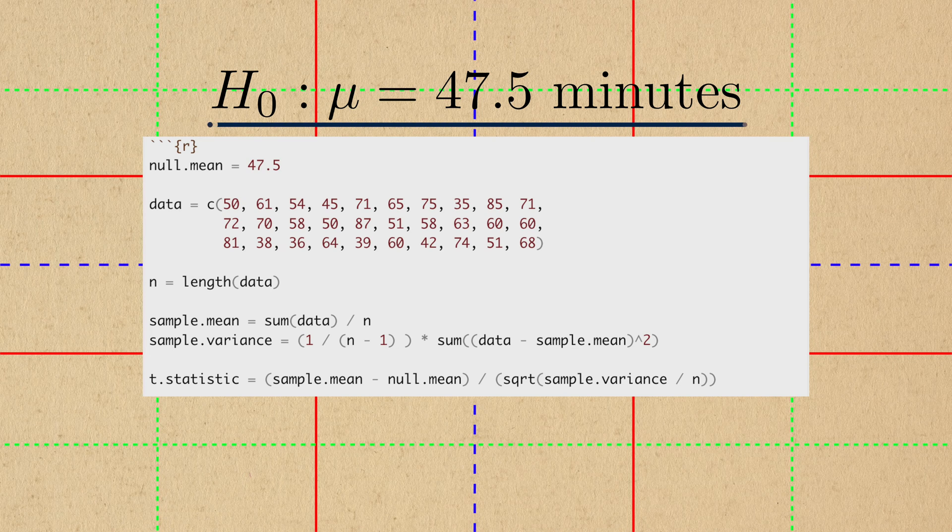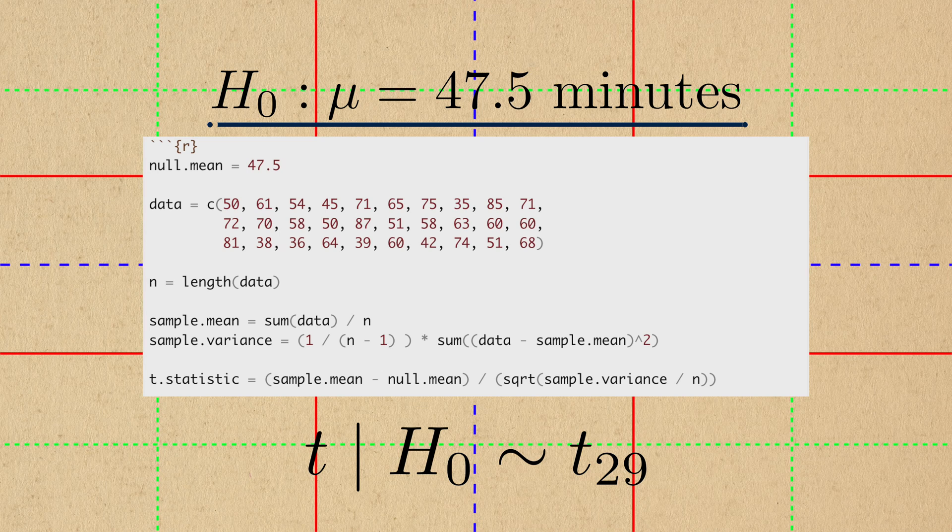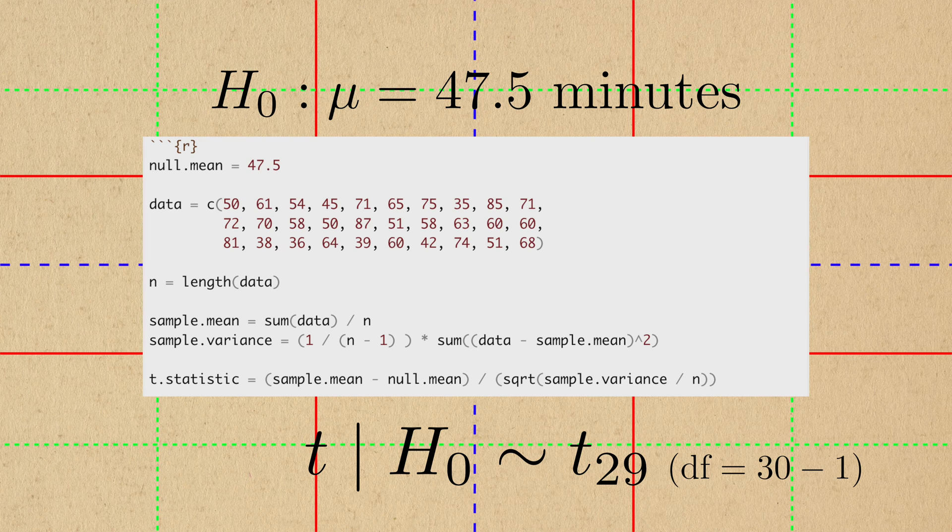Under the null hypothesis, this t statistic is distributed as a t distribution with 29 degrees of freedom. 29 comes from the fact that I collected 30 observations and must subtract 1.